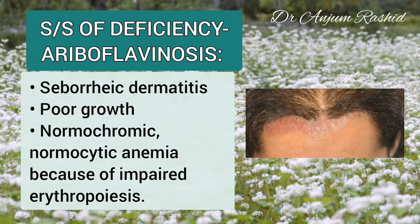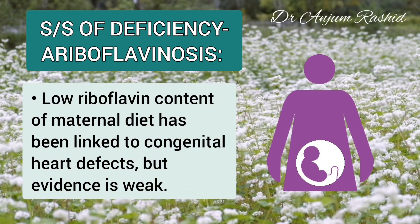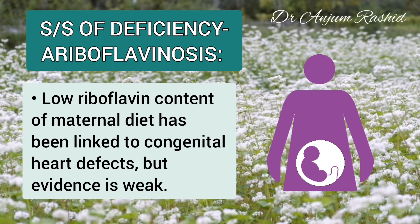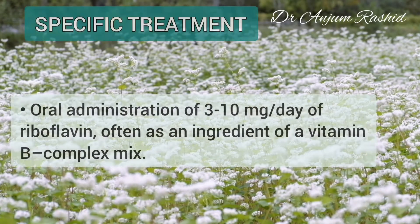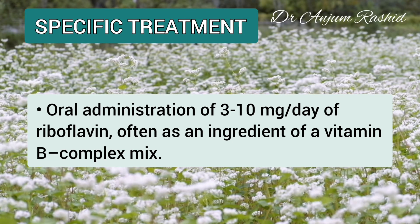Normochromic normocytic anemia may result because of impaired erythropoiesis. Low riboflavin content of the maternal diet has been linked to congenital heart defects in the fetus, but evidence is lacking.